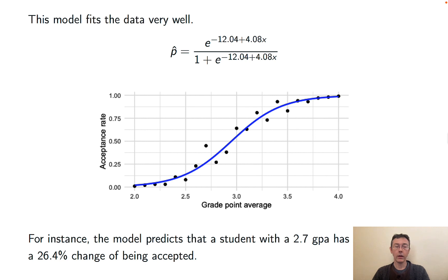For instance, this model predicts that a student with a 2.7 GPA has a 26.4% chance of being accepted. And I got that number just by plugging in 2.7 to the equation at the top of this slide.